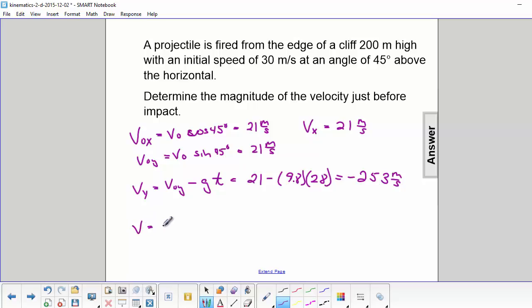To find v, we use the Pythagorean theorem: square root of 21² plus 253². We get about 254 m/s for the final velocity.